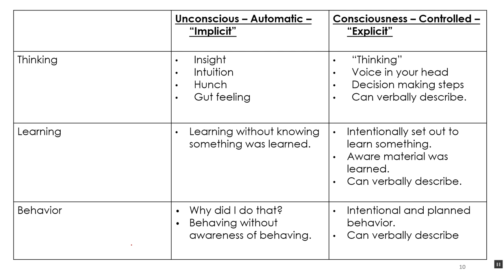Those are good examples of implicit versus explicit thinking and learning. Let's go over some things we'll be talking about in this class in terms of unconscious and conscious. In automatic or unconscious or implicit cognition we have terms like insight, intuition, hunch, and gut feeling — all examples of unconscious thinking, cognitive processes occurring below the level of our conscious awareness. If they're occurring below awareness, how do they let us know their results? They do that through insight, intuition, hunch, or gut feelings.